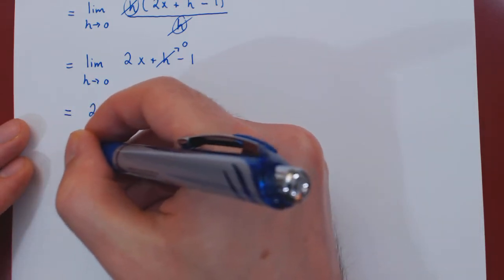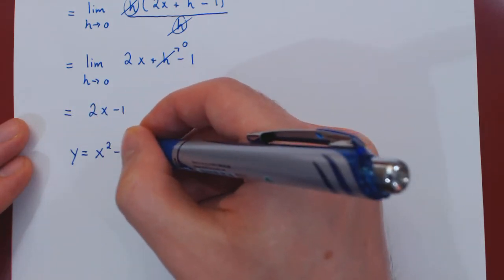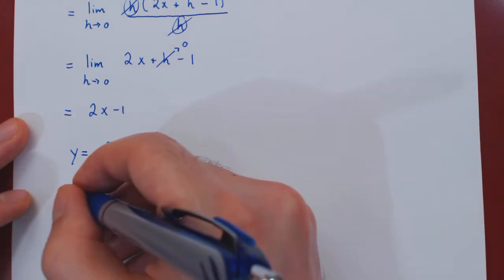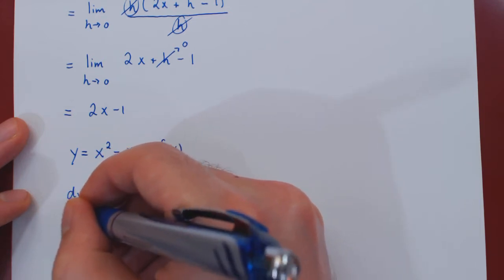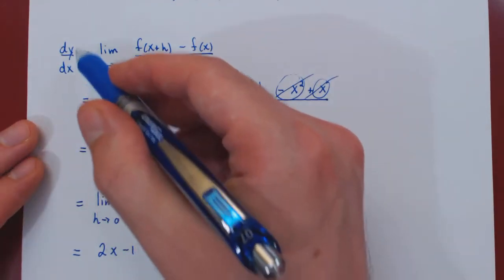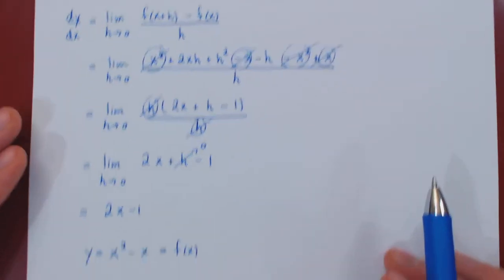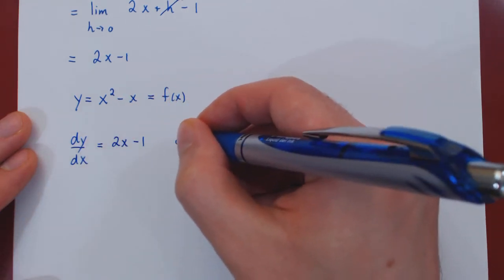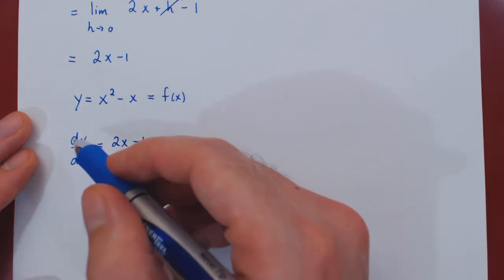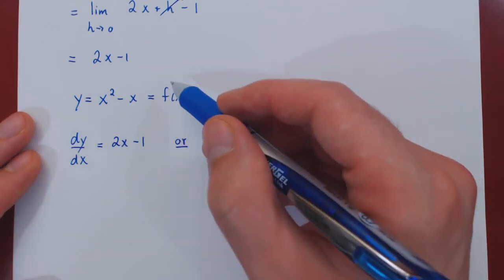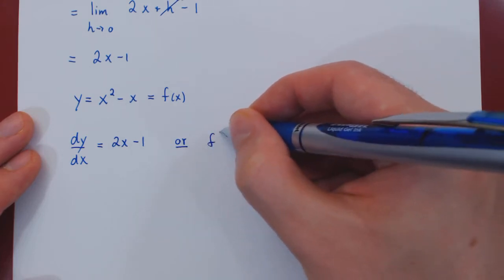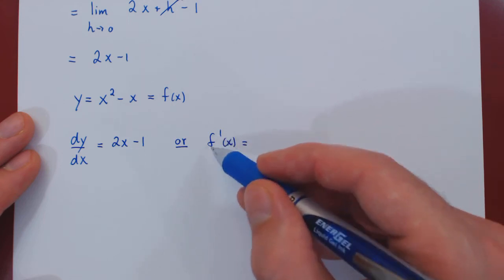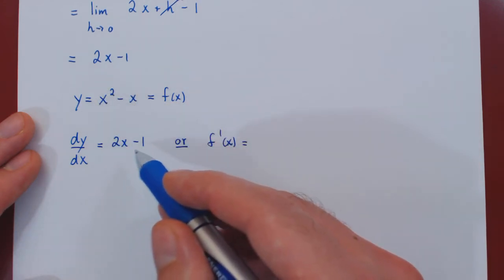Let's write down what we have and look at a few ways to write the derivative of the function. The function was y equals x squared minus x, which is also what we called f of x. One way of writing the derivative is dy over dx equals 2x minus 1. We could also write the derivative as f prime of x — this is an equivalent notation, and the prime means the derivative.